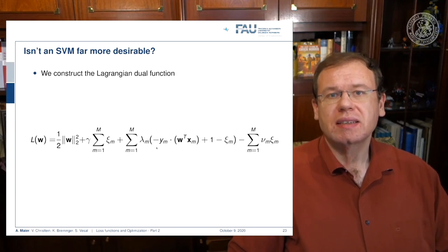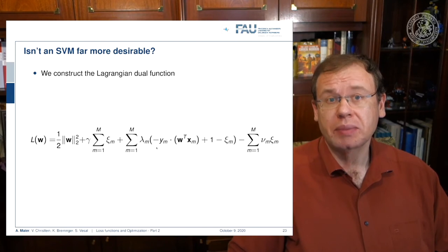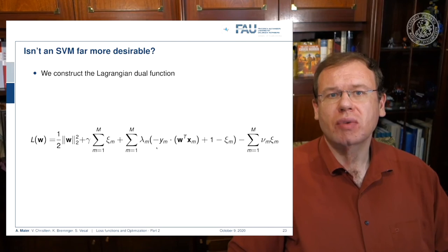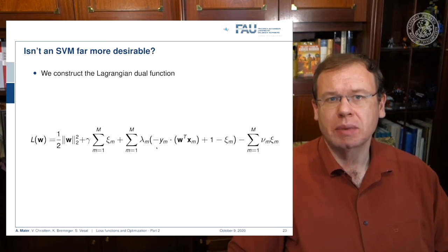This then leads us to the complete formulation of the soft margin SVM. And if I want to do this in a joint optimization, you convert this to the Lagrangian dual function.